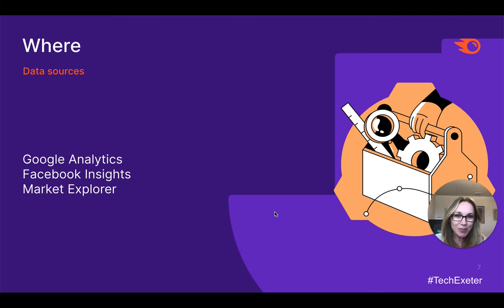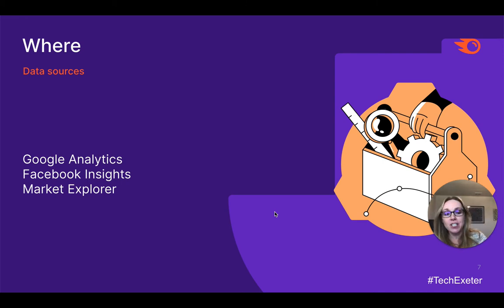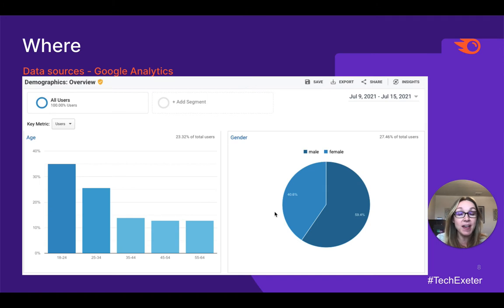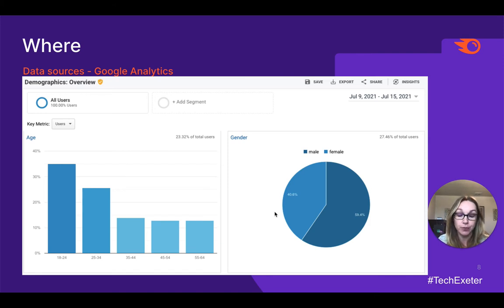The data sources we're going to walk through — before I show you how to use this information for social media — are Google Analytics, Facebook Insights, and SEMrush's own Market Explorer. You don't have to use Google Analytics specifically, but that's the tool I'll use for screenshots and examples today. If you're using another software, just ask where you can find this kind of information. But Google Analytics does a great job, so that's what we're going to use.